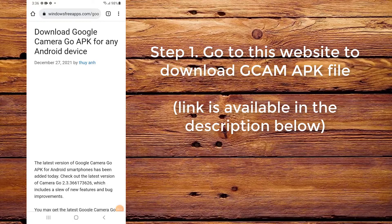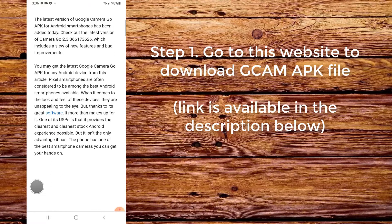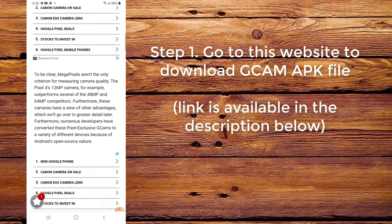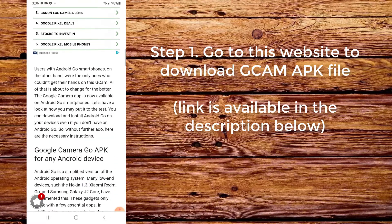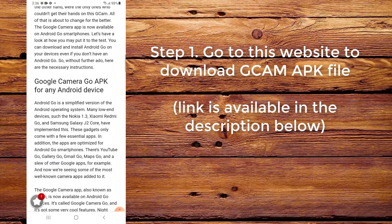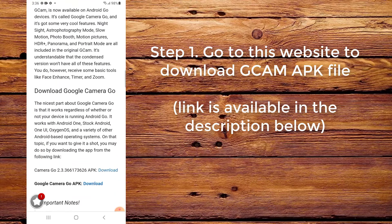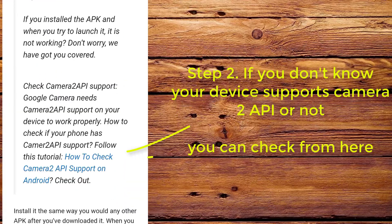Step 1. Go to this website to download the cam app file. The link is available in the description below. Step 2. If you don't know whether your device supports Camera2 API or not, you can check from here.